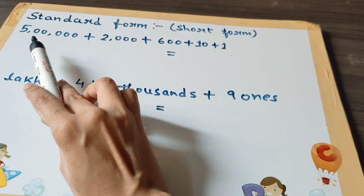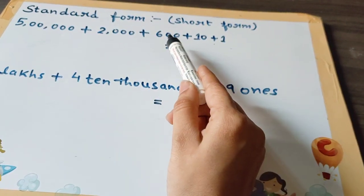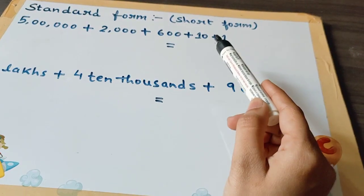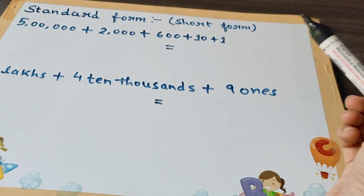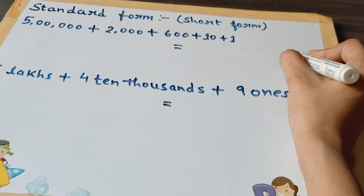Now you can see the number: 5,00,000 + 2,000 + 600 + 10 + 1. We have to write this number in short form. We will start from the ones place. At the ones place there is 1, so we will write 1.